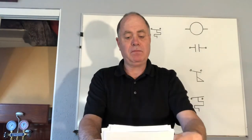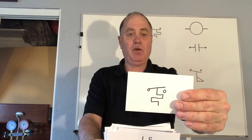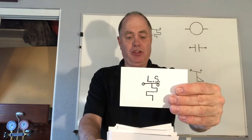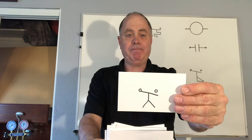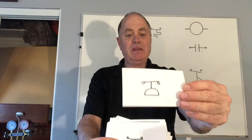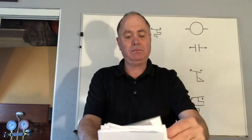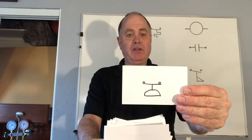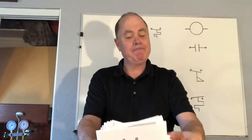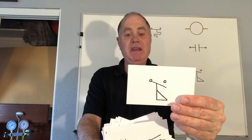This is a cooling thermostat, or a makes-on-rise thermostat. This is a heating thermostat, or makes on a fall in temperature. This is a limit switch. This is a time delay that makes with time. This is a humidistat that makes on a fall in humidity. This is a high pressure cutout. This is a low pressure cutout. This is a humidistat that makes on a rise in humidity. This is a flow switch that makes with flow.